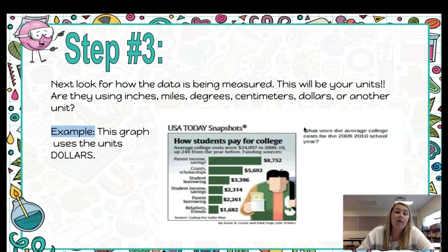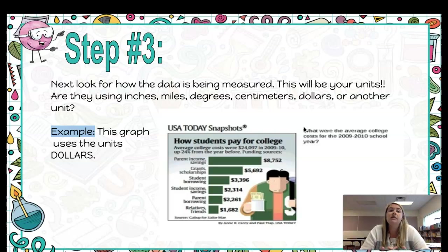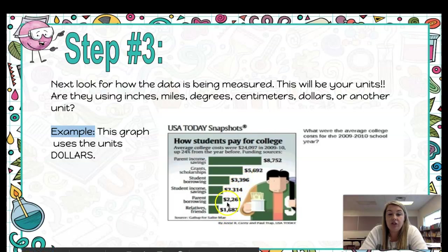Step number three: we have to look at how the data is being measured. So we've looked at the title, we've looked at the labels for the x and y axis or for categories in the graph — now we have to look at how it's measured. This is going to be your units. If we're looking at distance, temperature, or money, you might see units like inches, miles, degrees, or dollar amounts — those are all great examples of units.